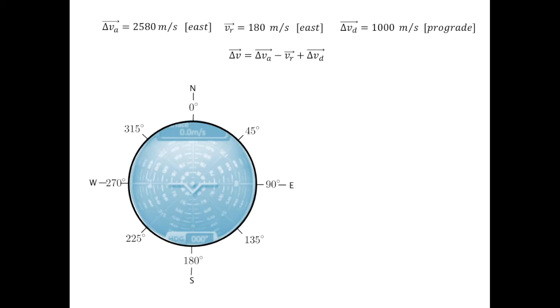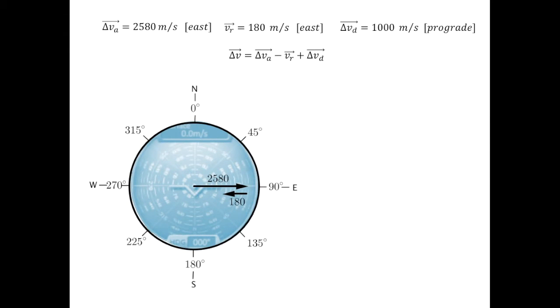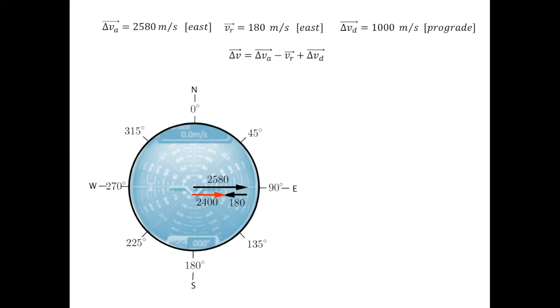Let's re-explore our prograde insertion, this time using vectors. We start by putting in our delta VA of 2580 meters per second east. From this, we need to subtract VR, 180 meters per second east, which we accomplish by adding the opposite, which is 180 meters per second west. Yielding a result of 2400 meters per second east. We then add on delta VD, 1000 meters per second prograde, which gets our familiar 3400 meters per second for our orbital insertion.